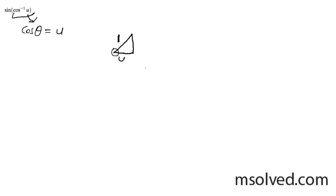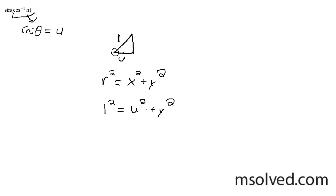This other side here — if you remember the Pythagorean theorem — the hypotenuse squared is equal to both sides squared. In this case, we can substitute in r as 1 squared, which is just 1, and for x we have u squared. We don't know y squared, but the representation of it will be: y squared is equal to 1 minus u squared, or simply y is equal to the square root of 1 minus u squared.